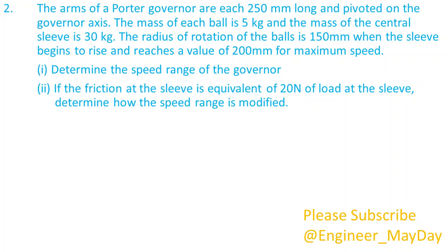Here is a second question. The arms of a Porter governor are each 250 millimeters long and pivoted on the governor axis. The mass of each ball is 5 kilograms and the mass of the central sleeve is 30 kilograms. The radius of rotation of the balls is 150 millimeters when the sleeve begins to rise and reaches a value of 200 millimeters for maximum speed. 1. Determine the speed range of the governor. 2. If the friction at the sleeve is equivalent to 20 Newtons of load at the sleeve, determine how the speed range is modified.